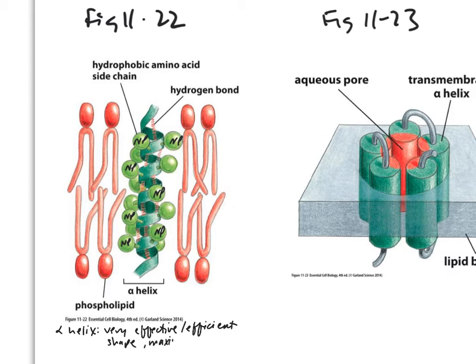The alpha helix maximizes hydrogen bonds between the backbone of the polypeptide — the different nitrogens, carbons, hydrogens, etc. This is especially important because within the central portion of the membrane, water is excluded due to the hydrophobic side chains. The alpha helix is essentially one of the only ways the backbone can form a stable structure under those conditions.